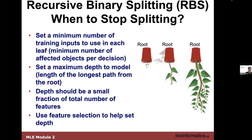The depth should be a small fraction of the total number of features. With the car example we had three features and depth of one to two. Sometimes you choose an arbitrary number like a maximum depth of three. You also have to decide when you're splitting between three individuals versus the 1,700 starting in the Titanic — if a tree of depth three or four covers 90% of survivorship, there's no point trying further.